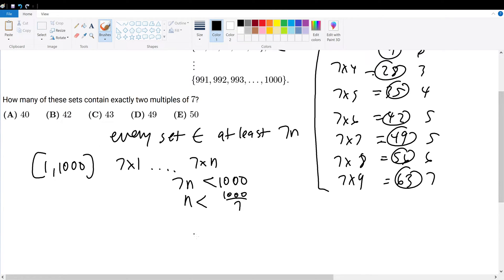So we must take the floor function of 1,000 divided by 7, which is 142. So 7 times 142 would give you 994, and that's the largest multiple of 7 that it will go up to.